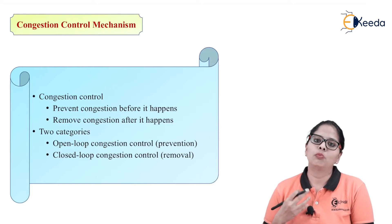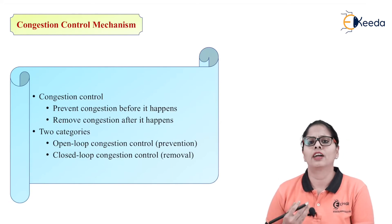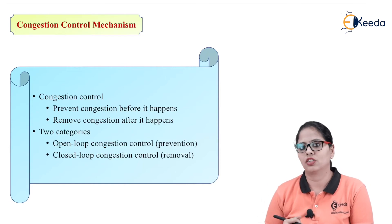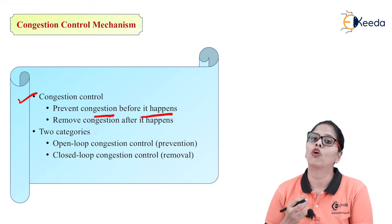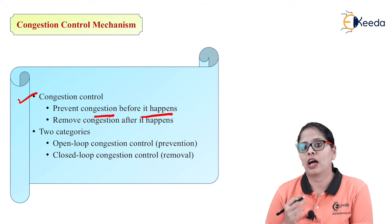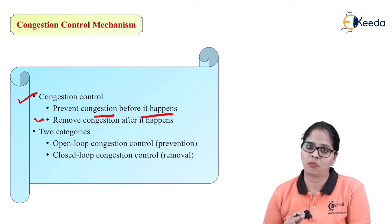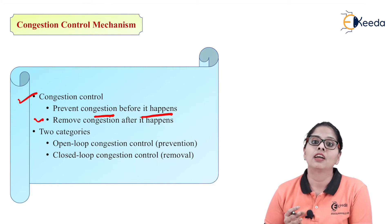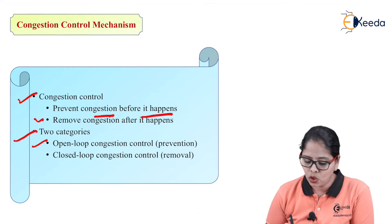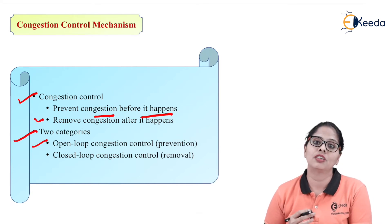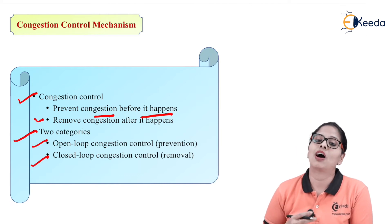Now that we understand congestion, let us focus on how to avoid it using congestion control mechanisms. There are two approaches: prevent the congestion before it happens, or remove the congestion after it happens. The first category is open loop congestion control — to avoid congestion. The second is closed loop congestion control — when congestion has taken place, how to overcome it.